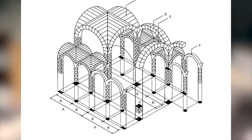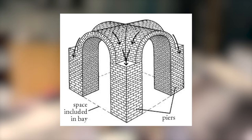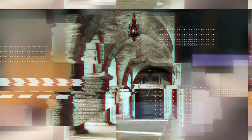Groin vaults were discovered by Roman architects and are essentially two barrel vaults intersected at right angles. They can span rectangular areas of great lengths because the loads are redirected and concentrated at their four corners. The supporting walls aren't as massive as those of barrel vaults, and less buttressing is required. However, this vault type requires greater precision.